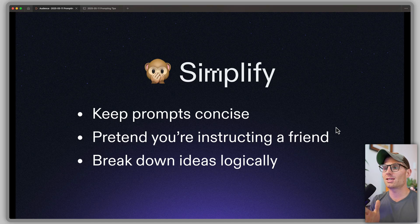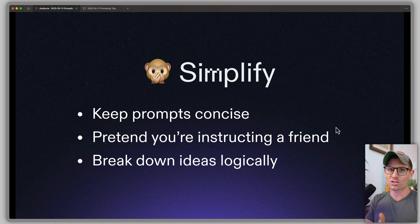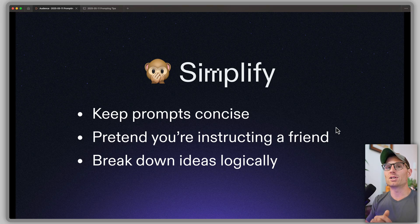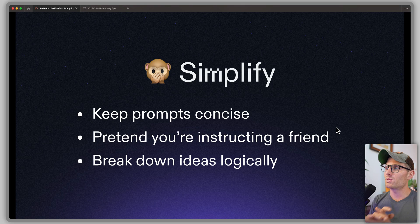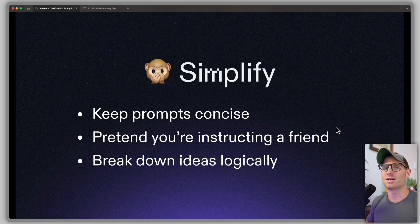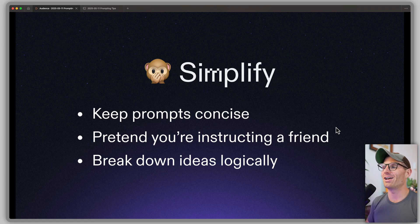Next tip: simplify. Keep prompts concise. In the same way you don't want conflicting information, too much information can get confusing. Break your ideas down logically — being logical, specific, and minimalist works really well. That minimalist approach also means you get more checkpoints: do one thing, checkpoint it, then do the next thing. It's better than trying to do 10 things at once. Work as if you're instructing someone and you don't want them to get confused, because the words you use are very important in terms of what the LLM does.